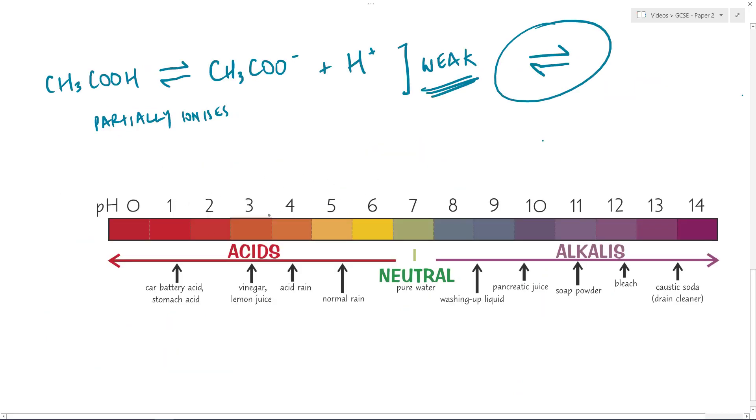Just to very quickly go back to this pH scale that we had before. What we can see now is that we can start to apply this term strong and weak to the pH scale as well. We find that at the ends, we have our strong acids and strong alkalis, and as we move into the middle, we move into the weak regions, and then in the very middle, of course, we have this neutral portion.